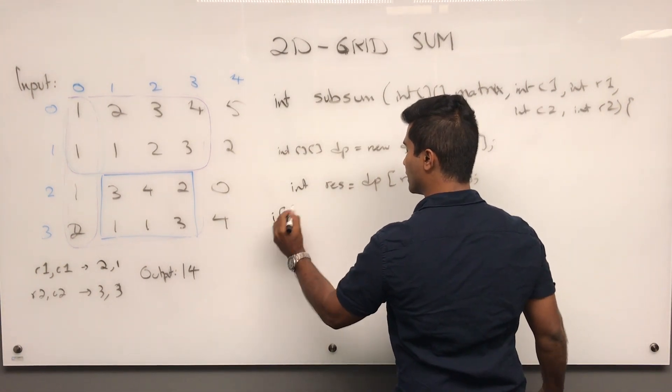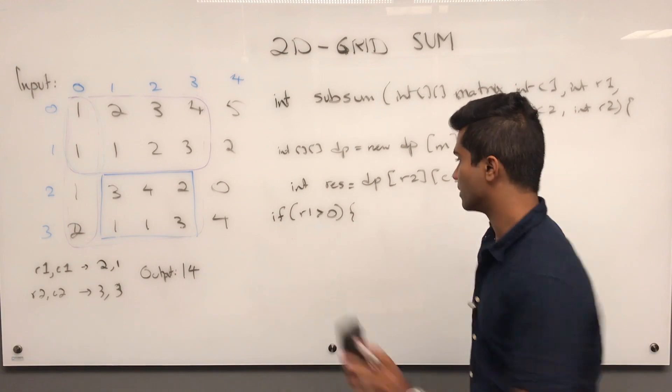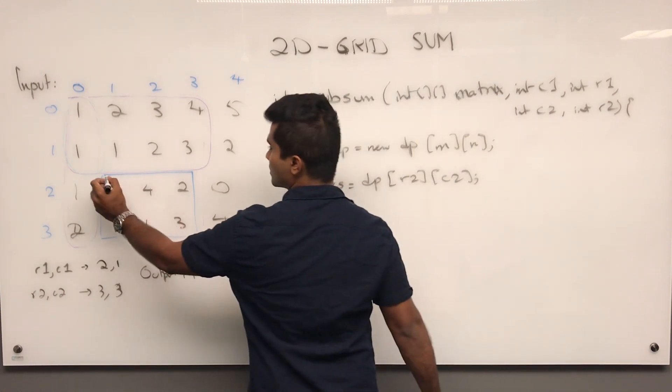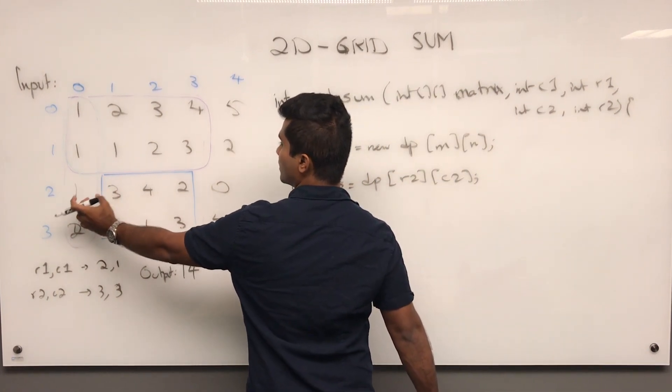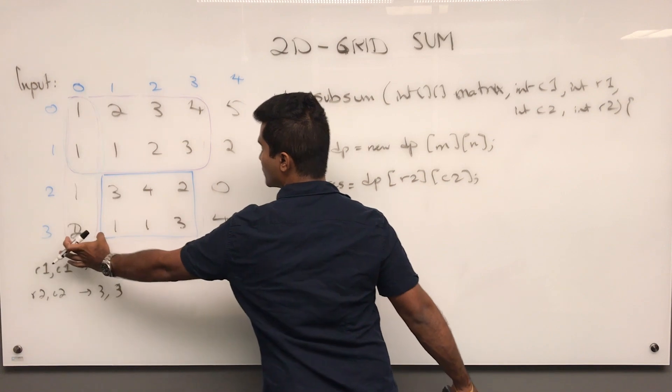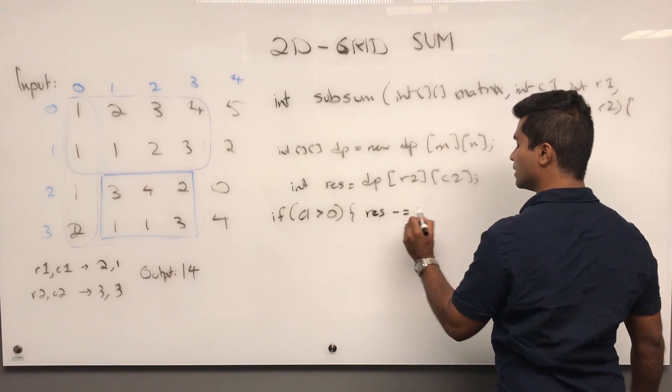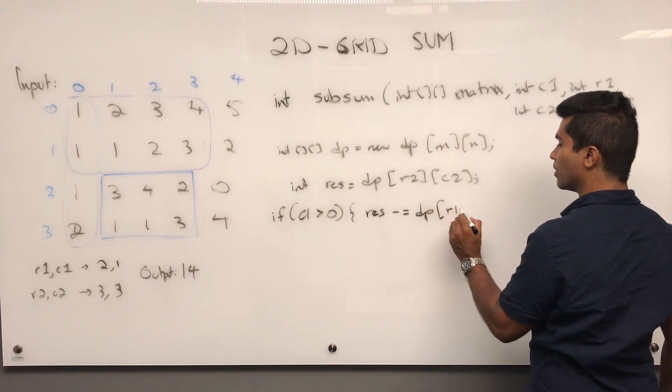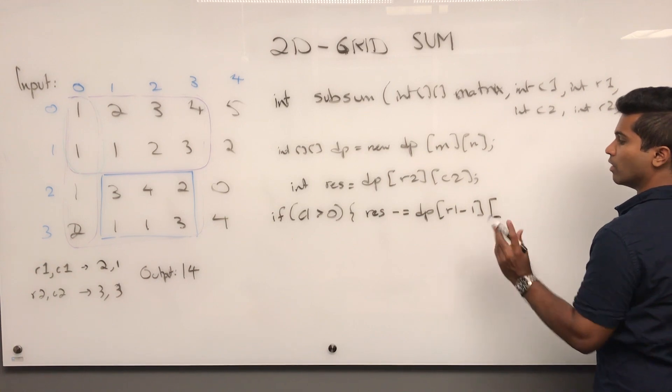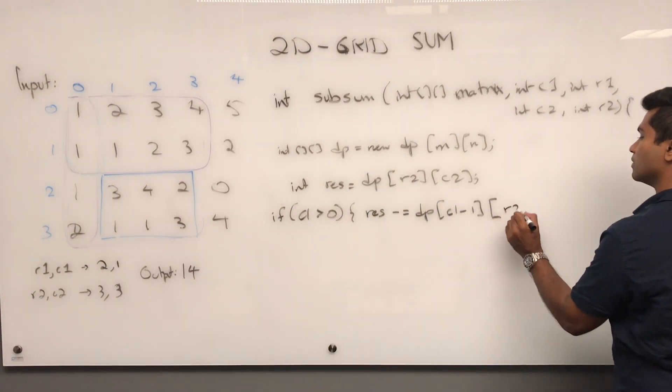So let's take away the left side first. So if c1 is greater than 0, because we're talking about the column, if this is greater than 0, then we want to take away this whole guy. So that's going to be res subtracted by DP r2 c1 minus 1. Because this is r1, so we need r1 minus 1. And it's at the bottom here, so this is going to be r2.